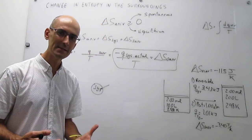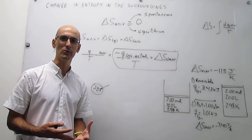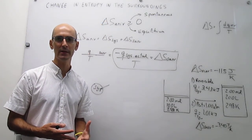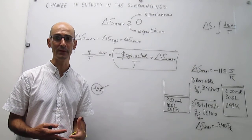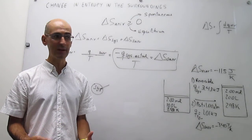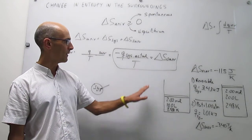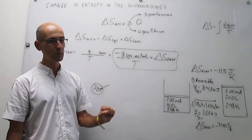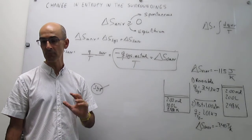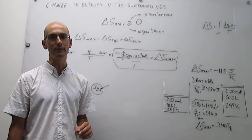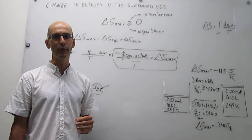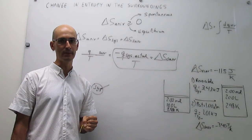To conclude: this explanation covers how to calculate the change in entropy in the surroundings. For every single problem, the equation you will use is: change in entropy of surroundings equals negative Q actual over T, and that is going to work effectively for every single problem.